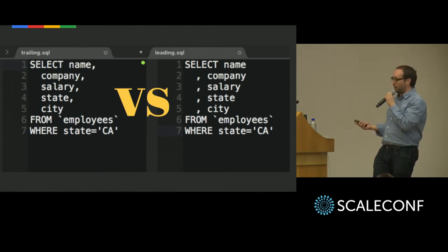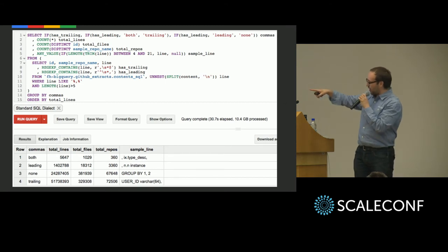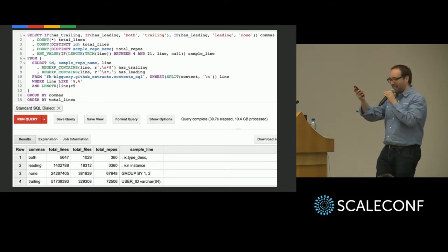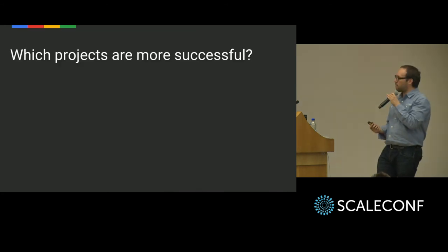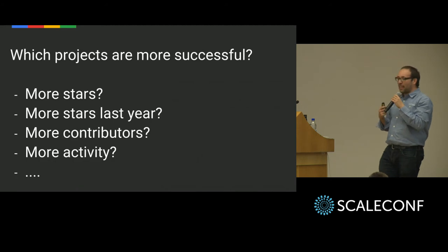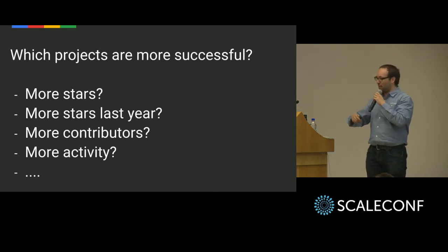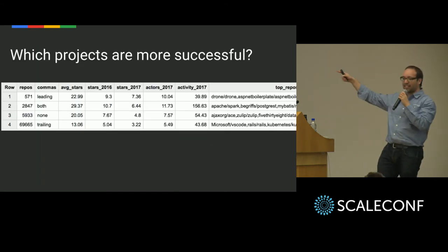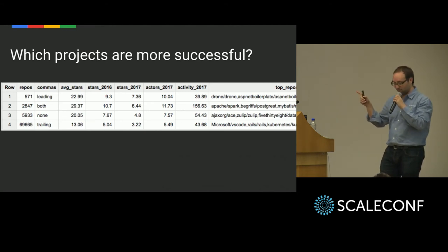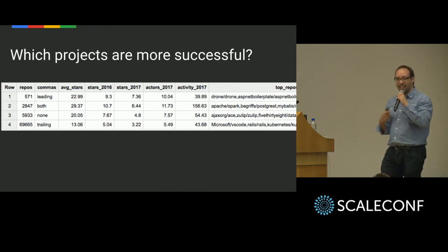I wanted to prove that was the right thing to do. It turns out way more people put their commas at the end. So I could run a survey and it's exactly what I got. But then the real question is: what projects are more successful? How do you define success — number of stars, stars last year, how many contributors, how much activity? I took all of these projects, ran my query, and these were the results: projects that allow you to put commas at the start are double as successful as other projects.